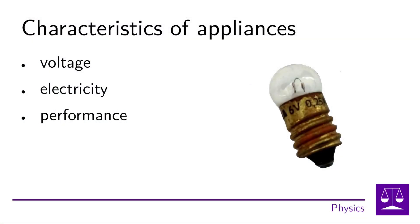The last thing we will mention is the characteristics of the appliances. The three characteristics listed on most electrical appliances are their wattage in units of watts, the electrical voltage to which the appliance needs to be connected, and possibly the electrical current it consumes. In most cases, it is sufficient to list only two of these three characteristics.